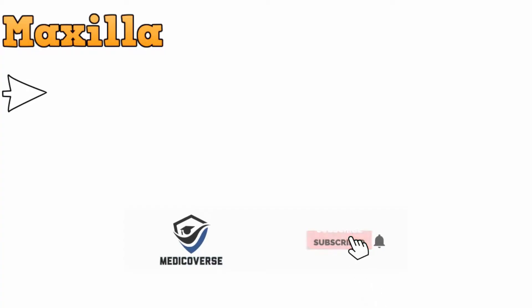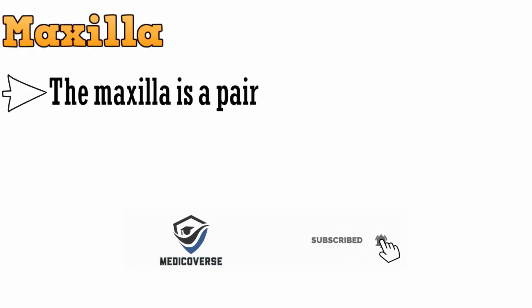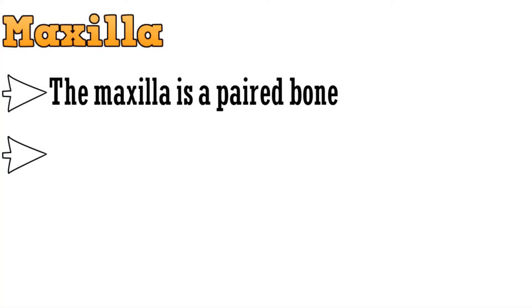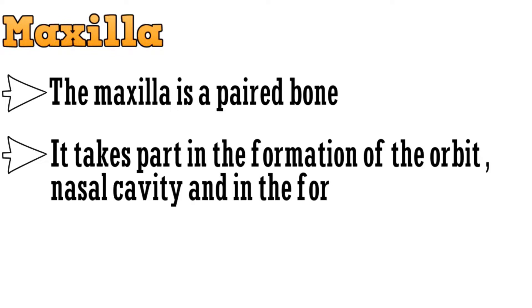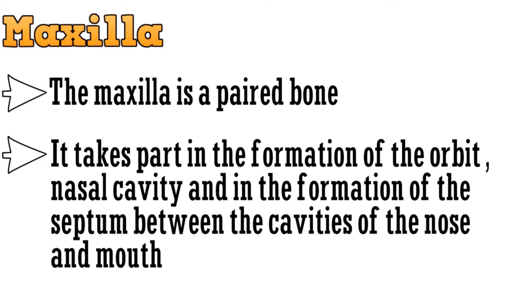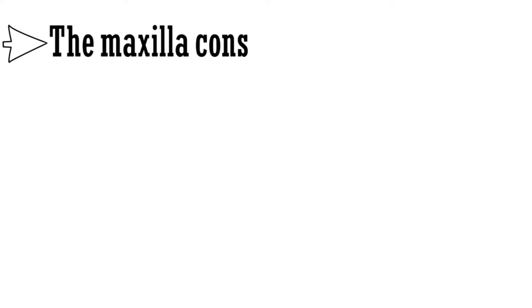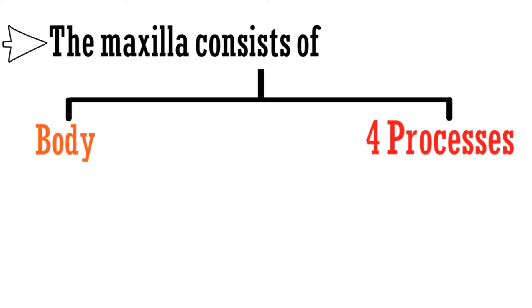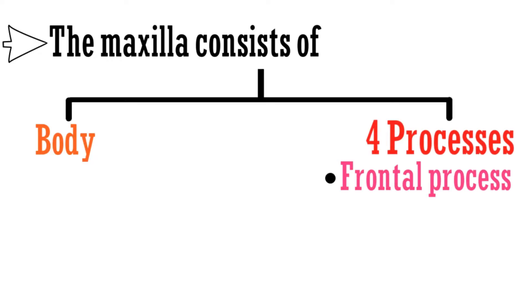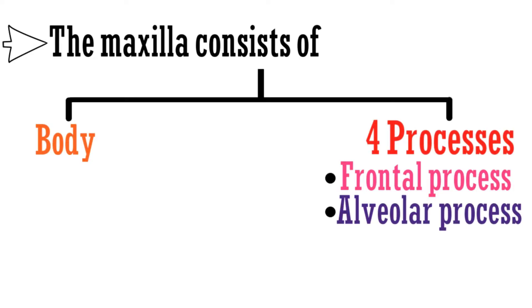Starting with the general information, maxilla is a paired bone and it takes part in the formation of the orbit, nasal cavity, and the septum between the cavities of the nose and mouth. It consists of two parts: the body and four processes — frontal, alveolar, palatine, and zygomatic process.